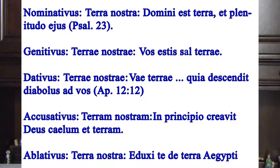Nominativus: terra nostra. Genitivus: terre nostre. Dativus: terre nostre. Accusativus: terram nostram. Ablativus: terra nostra. So: terra, terre, terre, terram, terra.